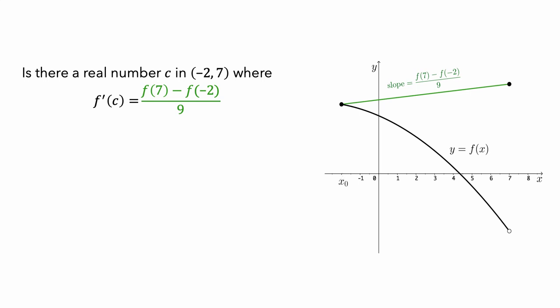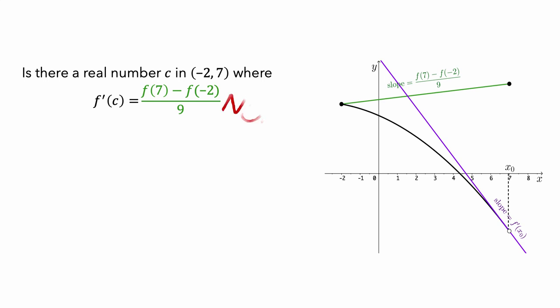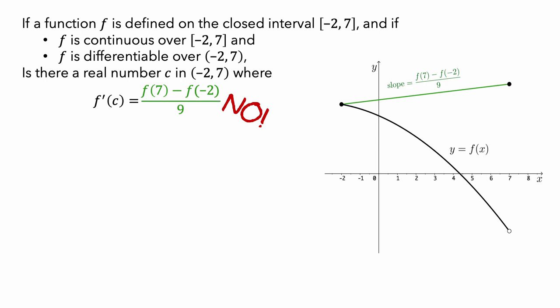Graphically, the instantaneous rate of change is represented by the slope of a line tangent to the graph of f. Let's start looking at the tangent lines at the left endpoint of the interval. The slope of this purple tangent line doesn't match the slope of the green secant line. Let's increase the value of x0 and see if we get a match. There weren't any values of x0 where the slope of the purple tangent line appeared to match the slope of the green secant line — there wasn't a real number c in the interval where f prime of c was equal to the average rate of change. This happened because this function was not continuous at x equals 7, which is one of the conditions required by the mean value theorem.